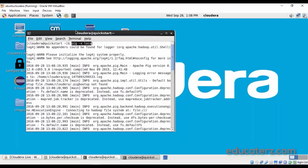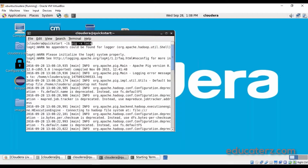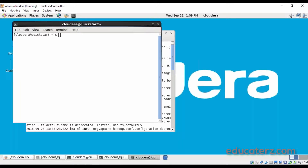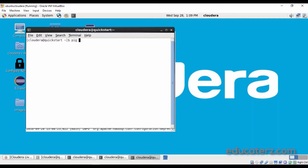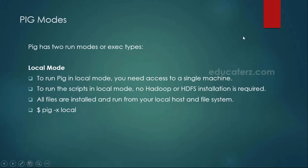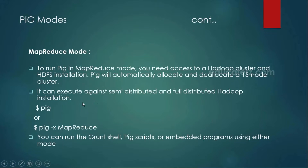'pig -x local' is the local mode, and either 'pig' or 'pig -x mapreduce' are the same — both connect to MapReduce mode. In local mode, no Hadoop and no HDFS is required; just work with the local file system. In MapReduce mode you must have your cluster up and running.